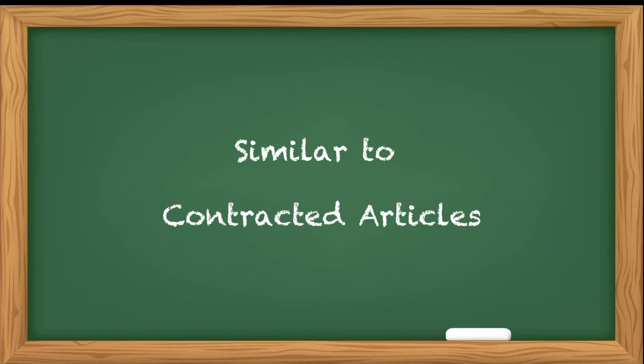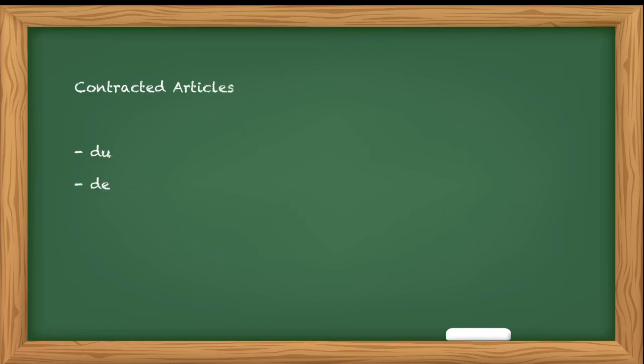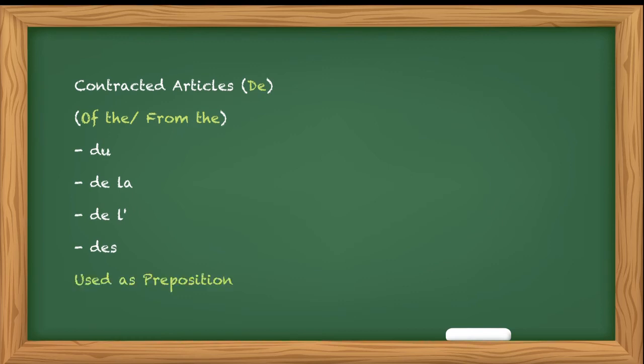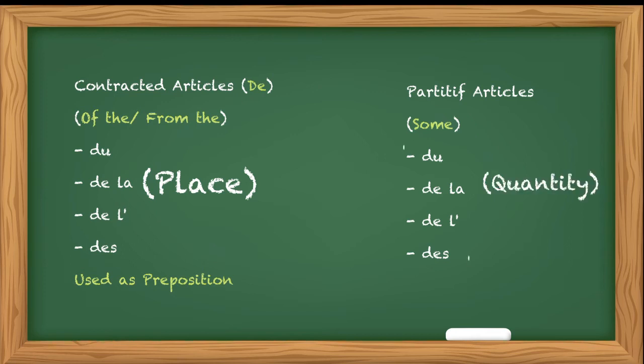I hope partitive articles are clear to you. They may look similar to contracted articles that we did in the last video: du, de la, de l', des. But there is a difference. Contracted articles are made from de plus the article, meaning of the or from the. That means they will be used as preposition. When you are referring to something in the sense of place, we will use contracted articles. But here, these articles mean some, some quantity.